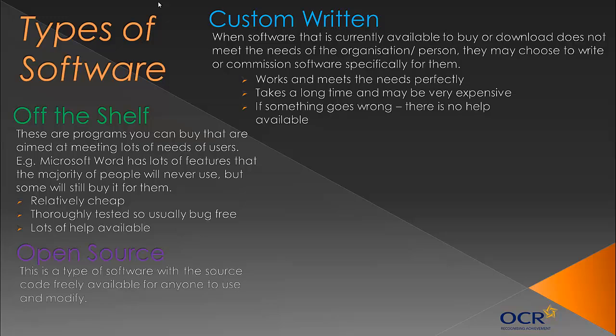Open source software is a type of software where the source code — the code written to make the program — is freely available. You can download it for free, and because the source code is provided, anyone can use it and modify it, adapting it to their own needs. It's usually free, though in some cases it may not be.